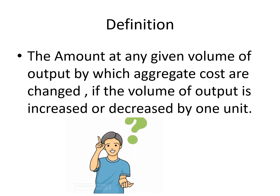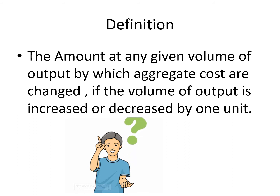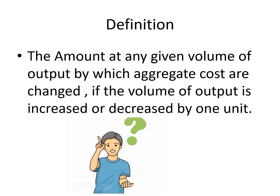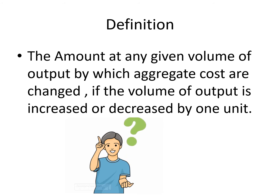A change in the total cost of production by increase or decrease of one unit of product is termed as a marginal cost according to economics. In cost accounting, the same concept is put in another way: a system of determining cost of production by excluding fixed expenses from total cost is known as marginal costing. That amount at any given volume of output by which aggregate costs are changed, if the volume of output is increased or decreased by one unit — in practice, this is measured by total variable cost attributed to one unit.